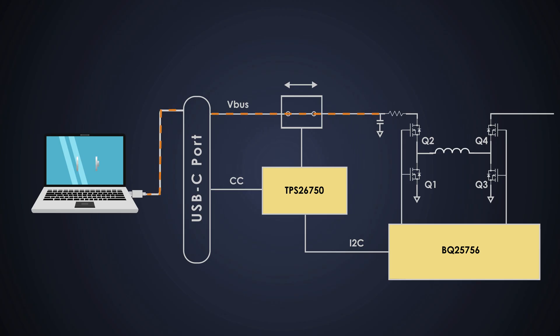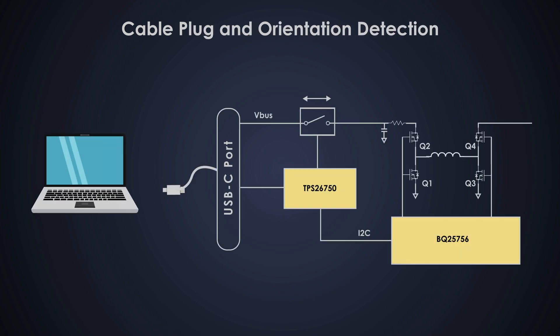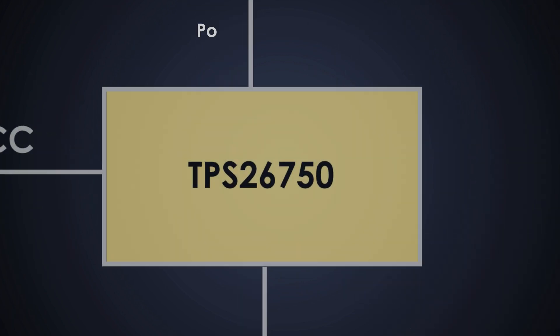First is cable plug and orientation detection. When you plug in the cable, the chip checks which way the cable is inserted — USB-C can be plugged in either way. It figures out whether to use the CC1 pin or CC2 pin to manage communication and power transfer. You can plug in the charger upside down and the chip can activate either or both pins as needed.